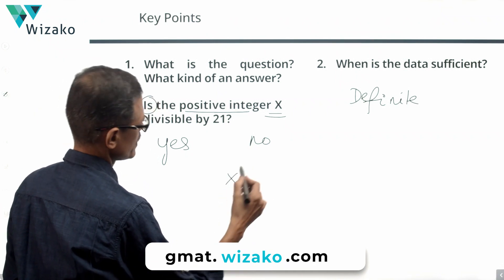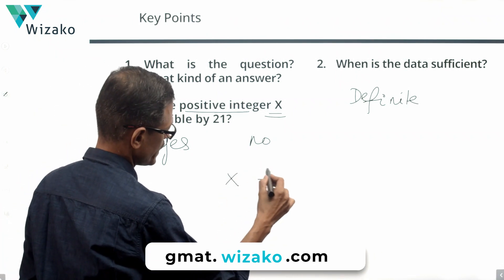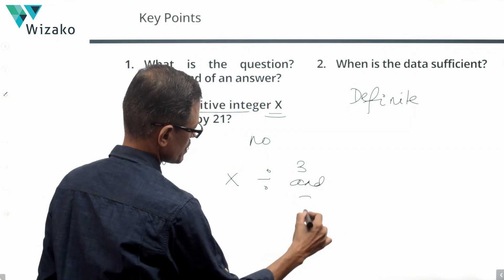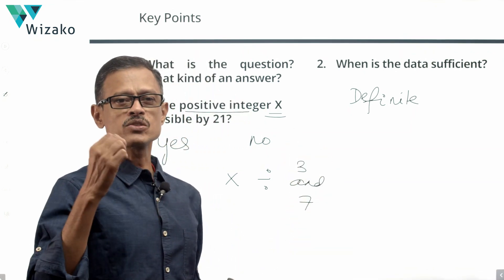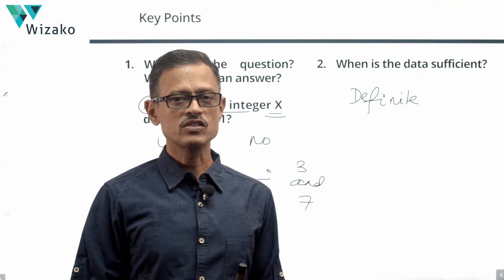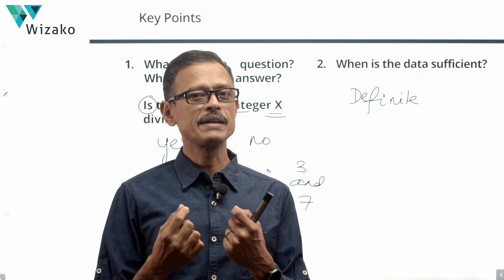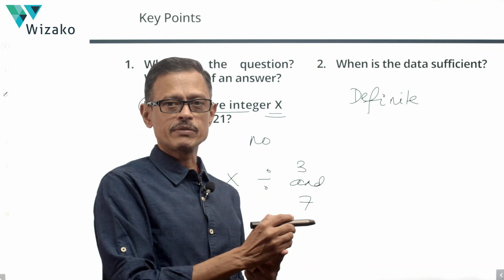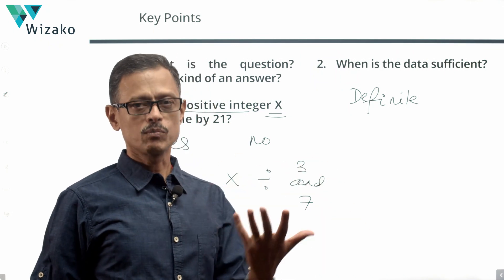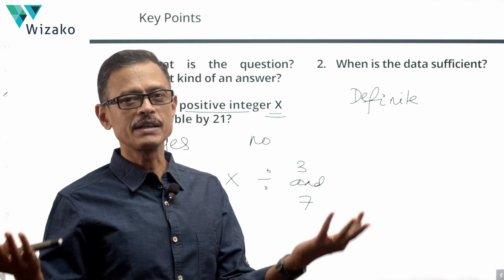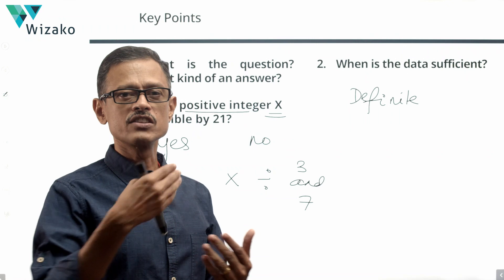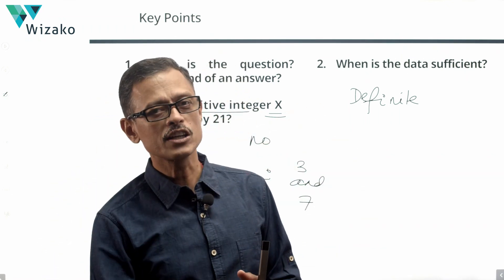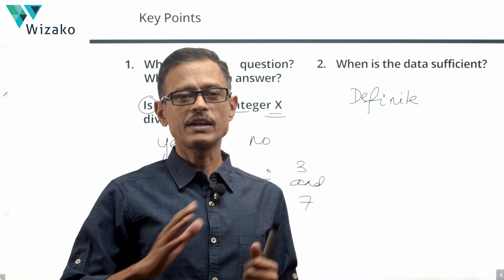For x to be divisible by 21, it must be divisible by both 3 and 7, since 21 = 3 × 7. If it fails for one or more, it cannot be divisible by 21. This divisibility framework is the key perspective for solving this question.